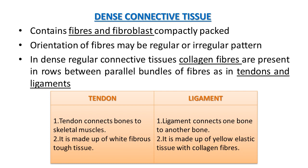In dense regular connective tissue, collagen fibers are present in the form of bundles as in tendons and ligaments. The difference between tendon and ligament: tendon connects bones to skeletal muscle, while ligament connects one bone to another bone. Tendon is made up of white fibrous tissue, and ligament is made up of yellow elastic tissue with collagen fibers.